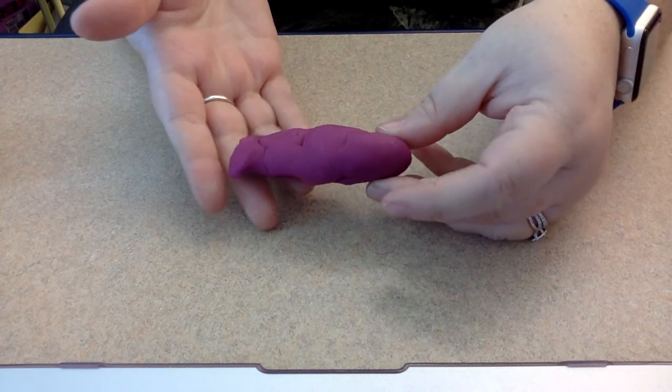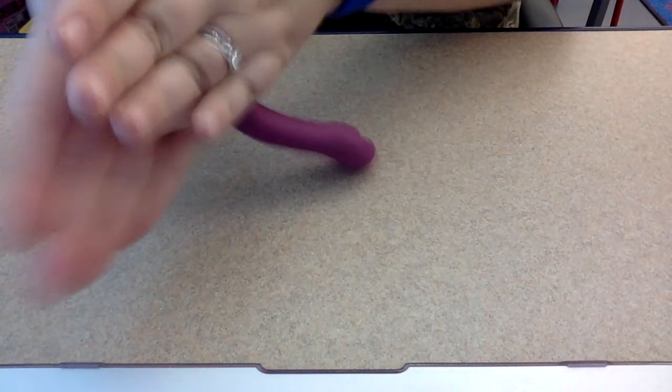Now I have one more shape to make. I'm going to make a circle. I'm going to use this whole piece of Play-Doh, and I'm going to make it into a line like this, and then I can shape it into a circle.